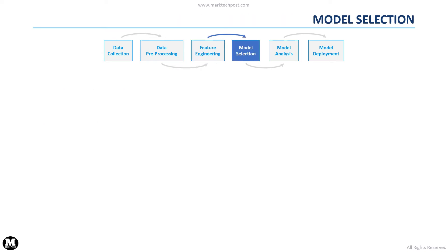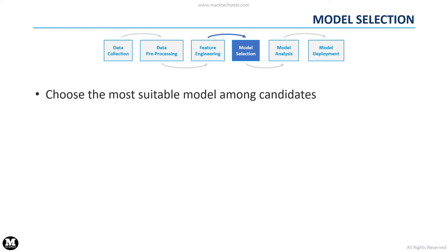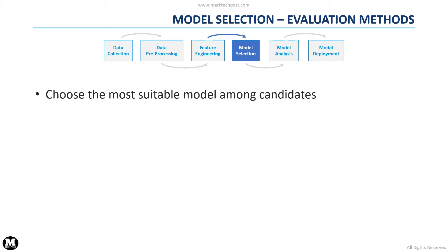The next step of the pipeline is the model selection process. Here we have to choose among candidate models which is the most suitable for our purpose. The candidate models depend on the constraints related to our dataset and problem. For example, some models may perform very poorly on high-dimensional data, and if we cannot dimensionally reduce our dataset, we cannot consider these models as candidates. Usually, candidate models are chosen based on state-of-the-art solutions already proposed for problems in the same research field. Each machine learning model has a set of hyperparameters that need to be tuned — parameters that must be manually set because they are not automatically learned during training. We need to define a method to evaluate the goodness of a specific model, so we can set the best hyperparameters for each model and choose the most suitable tuned model.